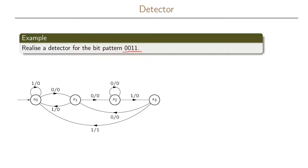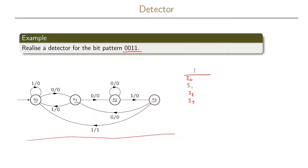This problem resulted in the following state transition graph that we have here. The first thing we want to do is make our state assignments, because our states are called S0, S1, S2, and S3. We need to assign to each state a bit pattern. This can be done arbitrarily, but we will use the following state assignments. For S0 to S3 we are going to need two state variables, which we call Q1 and Q2.